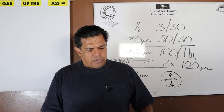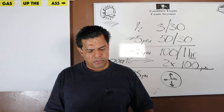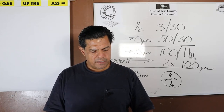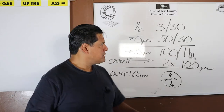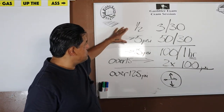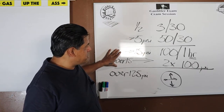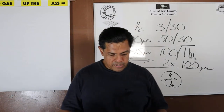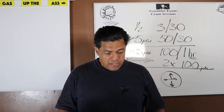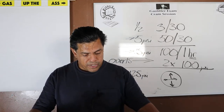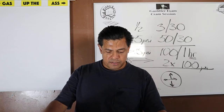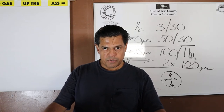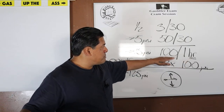Question five: the testing pressure for gas distribution pressures over five psi through fifteen psi, including fifteen psi, is 100 psi for one hour. Once we get past those two comparatively smaller pressures, we're in the big boys club — no more 30 minutes. Question six: for gas distribution pressures over 15 psi, the testing pressure is two times the maximum operating pressure but not less than 100 psi for one hour.